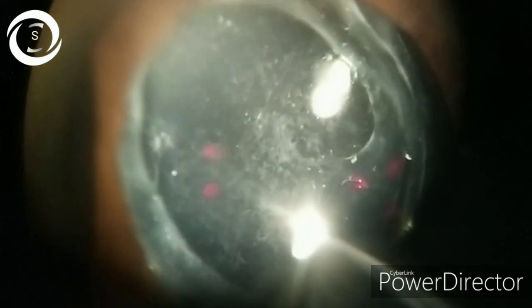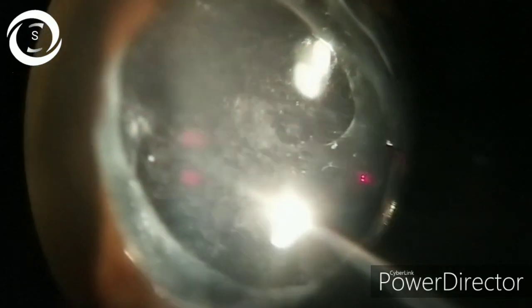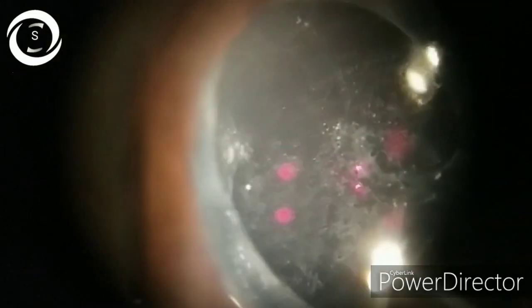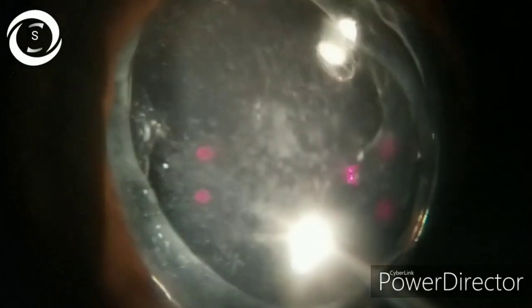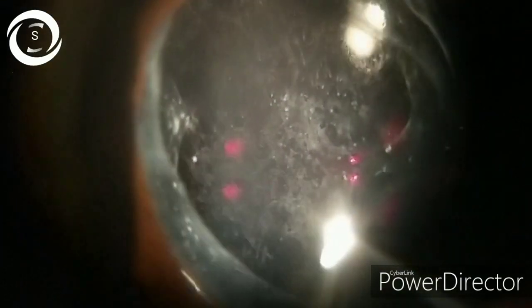PCO has two types: fibrous and pearly. Fibrous PCO presents as wrinkles and folds on the posterior capsule at the site of fusion of anterior and posterior capsules. Histology contains fibroblasts and extracellular matrix.